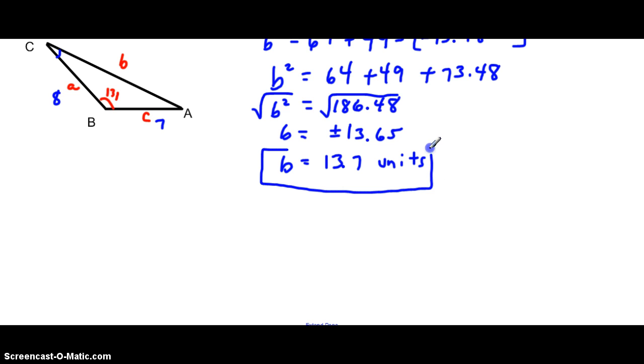Now that you've solved for b, the last step is solving for angle C. We will now solve for angle C and we'll use the cosine rule again where we have cosine of C equals a² + b² - c² all divided by 2 times a times b. So that would be 8² + 13.7² - 7² divided by 2 times 8 times 13.7.